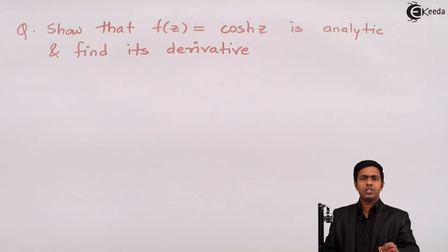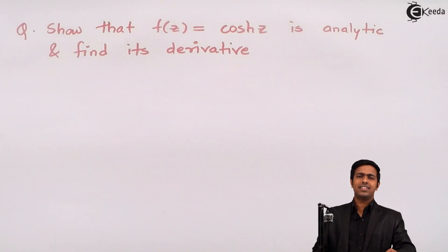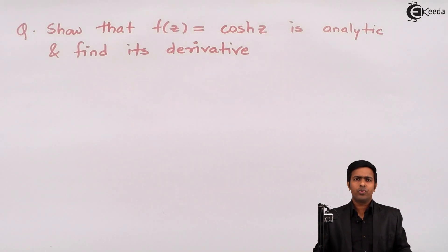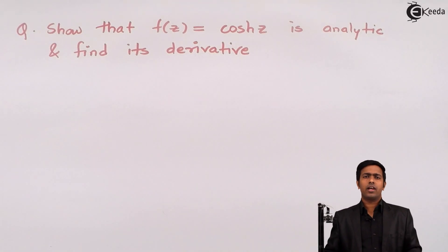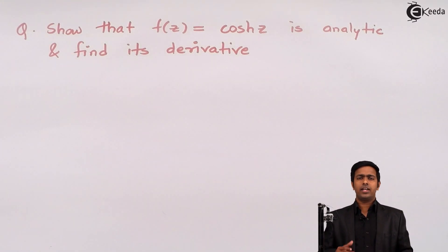Hi friends, in this problem we have to show that f(z) = cosh(z), which is hyperbolic cosine of z, is analytic, and we have to find its derivative. To show that a given function f(z) is analytic, we just have to prove the Cauchy-Riemann equations for that function. If the Cauchy-Riemann conditions are satisfied, then we say the given function is analytic.